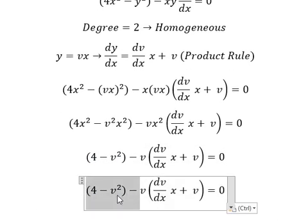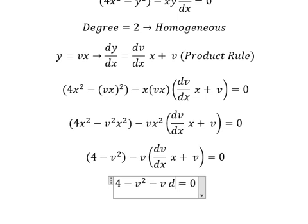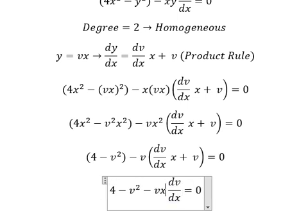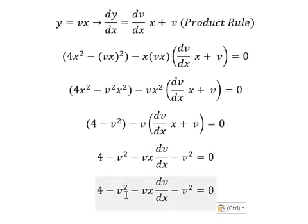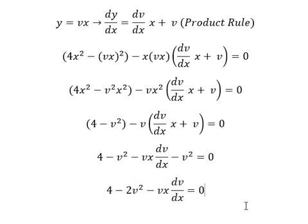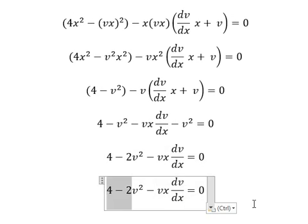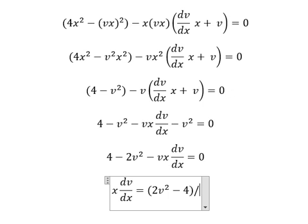Next, this one is about 4 minus v squared, negative vx, so we have like this. Next, negative v squared — we have number two. This one we put it to the right and we divide both sides by negative v, so this one we have: 2v squared minus 4 over negative v.